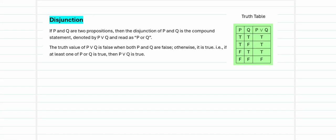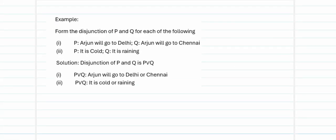Next is disjunction, representing the logical OR operator, denoted P ∨ Q and read as 'P or Q.' For the truth table: if at least one value is true, the output is true; the output is false only when both P and Q are false. For example: P = 'Arjun will go to Delhi,' Q = 'Arjun will go to Chennai' → P ∨ Q = 'Arjun will go to Delhi or Chennai.' P = 'It is cold,' Q = 'It is raining' → 'It is cold or raining.'